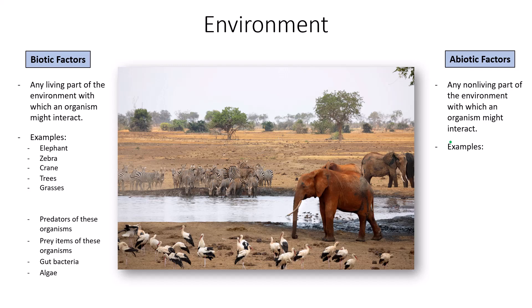The abiotic factors in this image include sunlight — we can see it's daytime, and sunlight, though not alive, impacts both living and non-living things. Temperature is probably hot; Africa is typically warm and this looks like a drought situation. Precipitation — the amount and type — is an abiotic factor, as is humidity and wind.